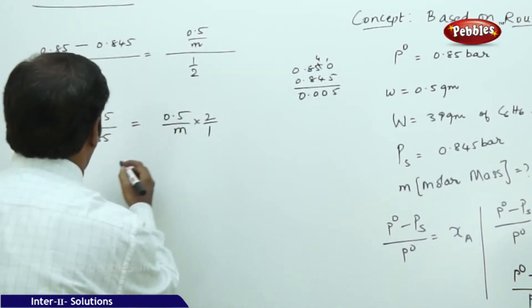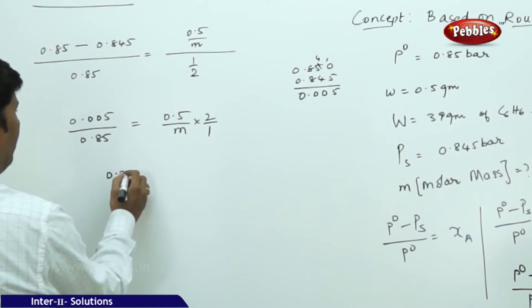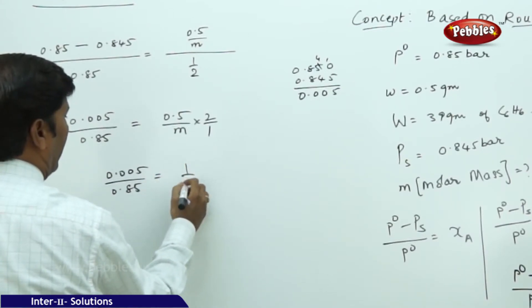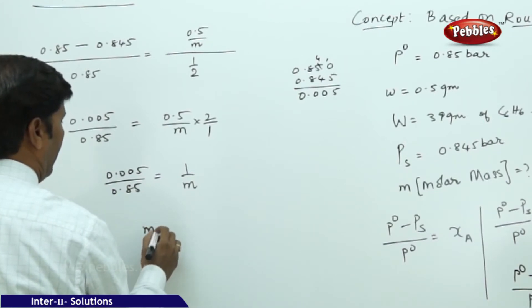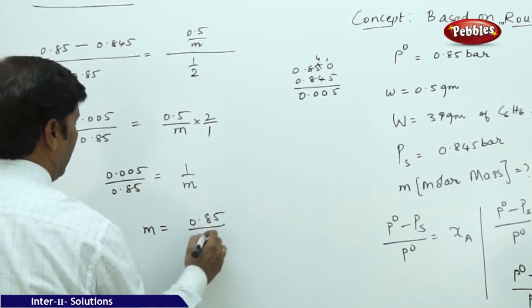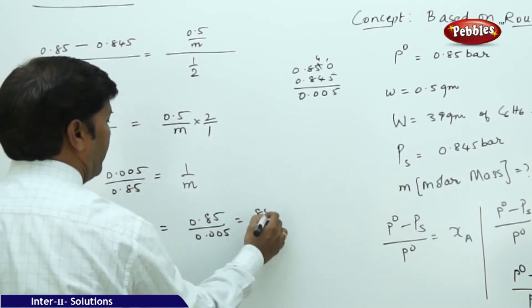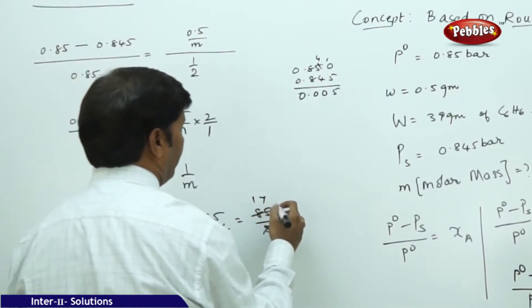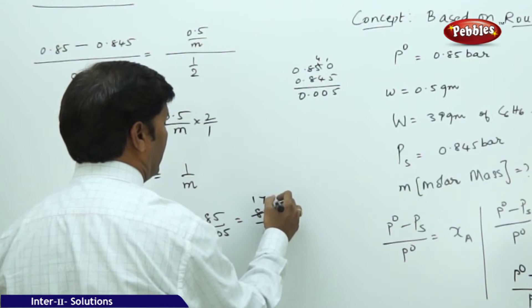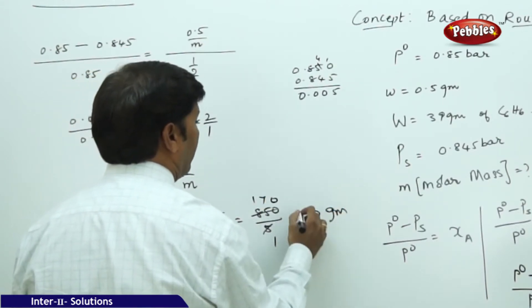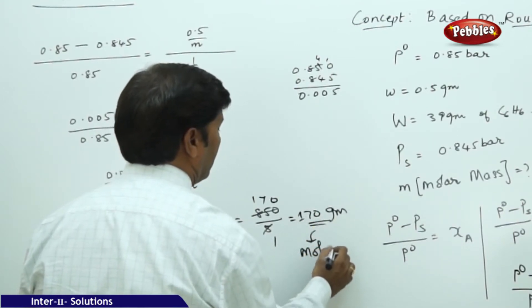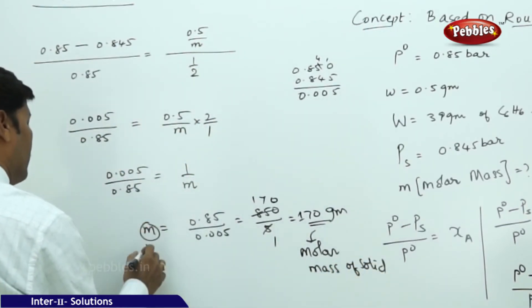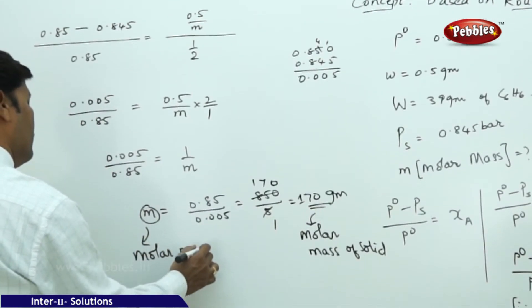Simplifying: 0.005 / 0.85 = 1 / m, so m = 0.85 / 0.005 = 850 / 5 = 170 grams. Therefore the molar mass of the solid is 170 grams per mole.